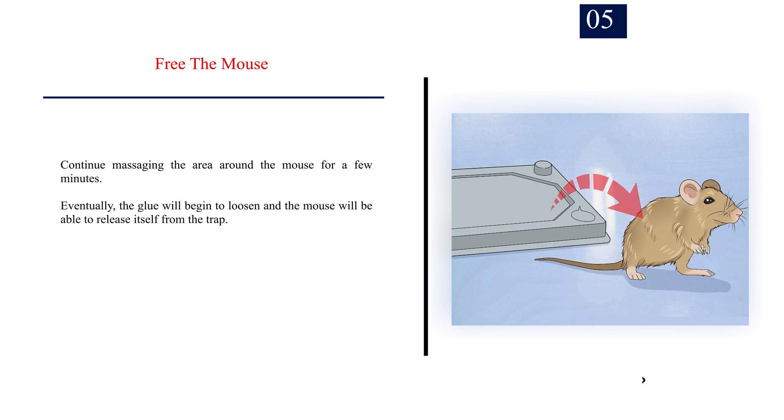Number 5: Free the mouse. Continue massaging the area around the mouse for a few minutes. Eventually, the glue will begin to loosen and the mouse will be able to release itself from the trap. As soon as the mouse is free, remove the trap from the container. Dispose of the trap in a plastic bag and seal the bag before transferring it to a garbage can.